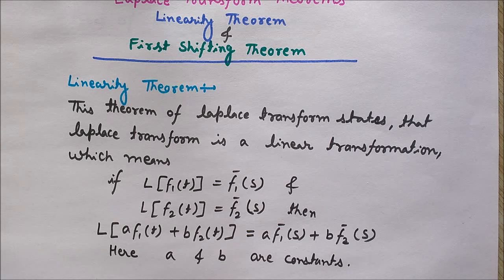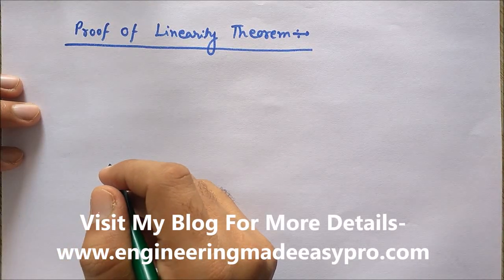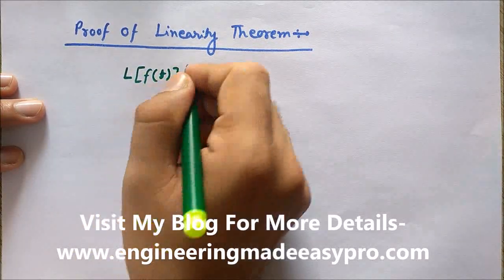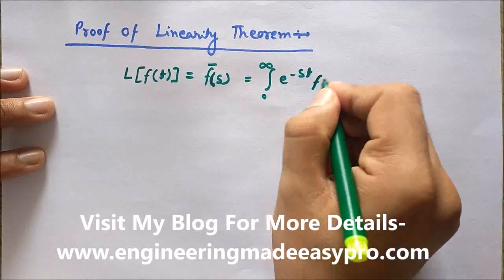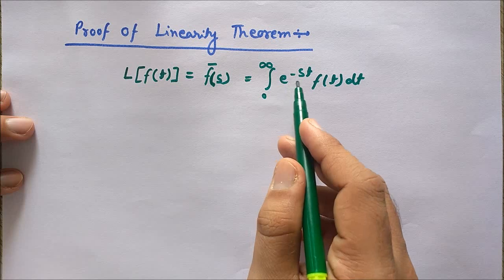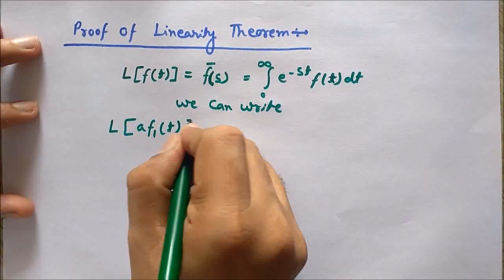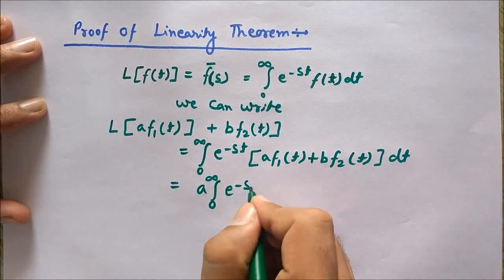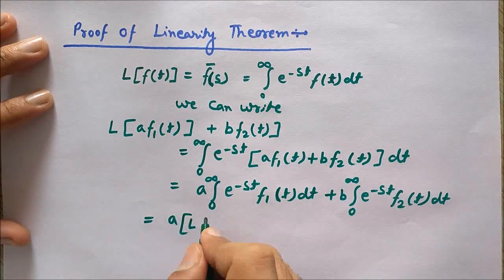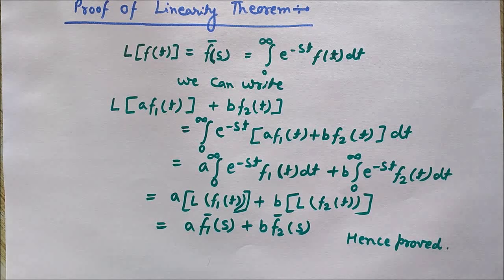This linearity theorem can easily be extended to more than two functions, so we can say that Laplace transform is a linear operator. Now let's see the proof of the linearity theorem. By the definition of Laplace transform, we know that the Laplace transform of f(t) is the integral from 0 to infinity of e raised to the power minus st times f(t) dt. So we can write the proof.